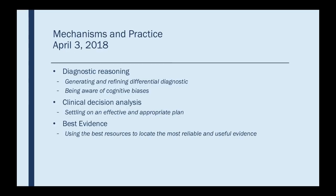We're going to focus in this mechanisms and practice session on three of the six elements. We're going to go into diagnostic reasoning — we'll talk about how to generate and refine a differential diagnosis, and then the preceptors are going to spend a couple minutes on the cognitive biases that influence or undermine diagnostic reasoning. We're also going to look at clinical decision analysis — how do we, with so much uncertainty in outcomes, settle on an effective and appropriate plan for the patient? And lastly, we will have a session where we look at the best resources to locate the most reliable and useful evidence.